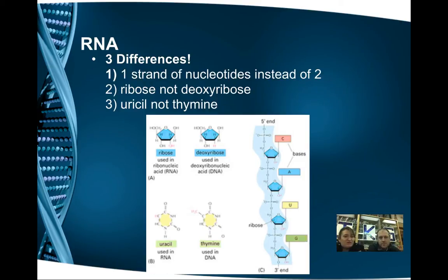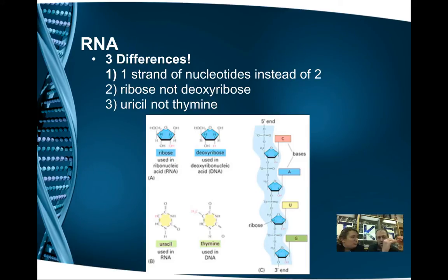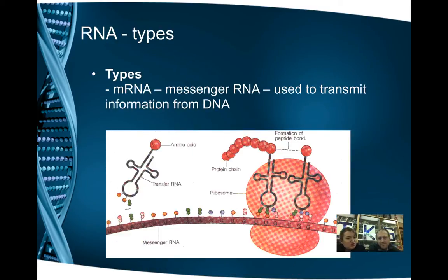There are three differences between DNA and RNA. First, RNA is a single strand — instead of two sides with base pairs, there's only one. Second, RNA has ribose sugar instead of deoxyribose. Third, RNA uses uracil instead of thymine, so the base pairs become C-G and A-U. Also floating around inside the nucleus are RNA nucleotides with a different sugar and uracil instead of thymine, so they can come in and bond, forming a single strand.